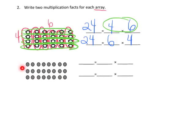Let's do the next array. We have three rows, so I'm going to label that with a three, and we have one, two, three, four, five, six, seven, eight — so we have eight columns. We have three rows with eight in each column, so traditionally we would begin by writing that as three rows of eight, or three times eight, and that equals 24.